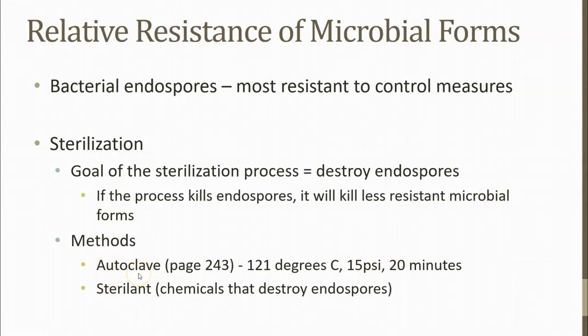Using an autoclave uses steam and high heat. The goal is to reach 121 degrees Celsius and hold the pressure at 15 pounds per square inch, maintained for 15 to 20 minutes. If we hold it at that temperature and pressure for 20 minutes, we can guarantee those endospores will not be viable. Ethylene oxide is one of those gas sterilants that can be used to destroy all matter of life.